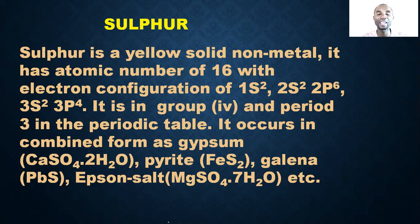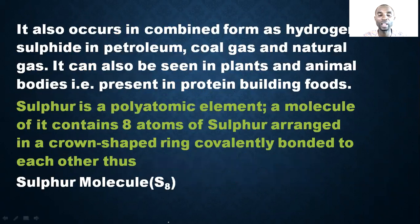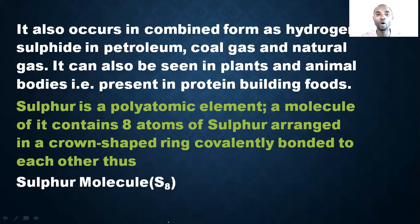Sulfur also occurs in combined form as hydrogen sulfide in petroleum, coal gas, and natural gas. It can also be found in plants and animals, meaning it is present in protein-building foods.